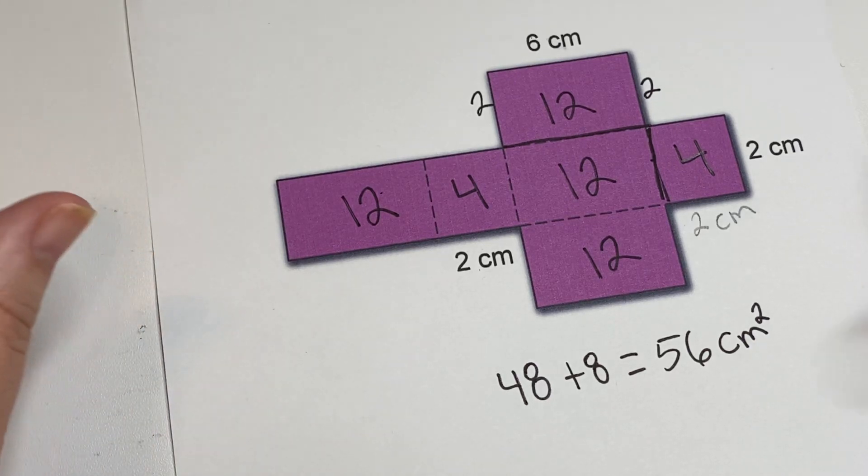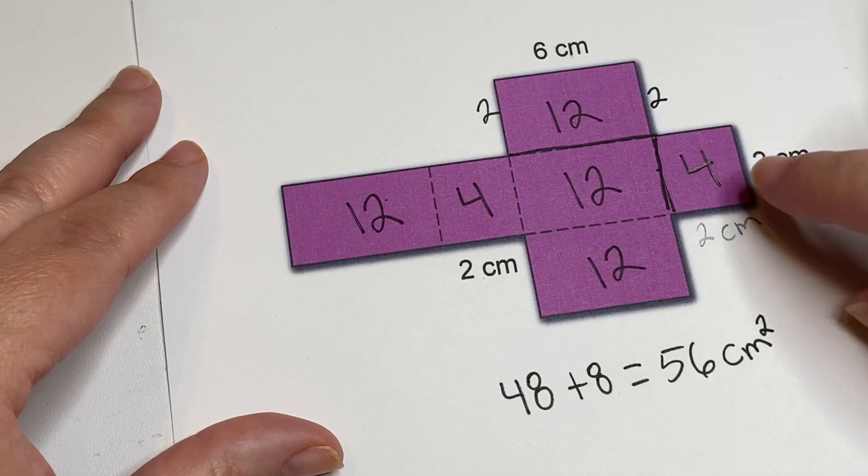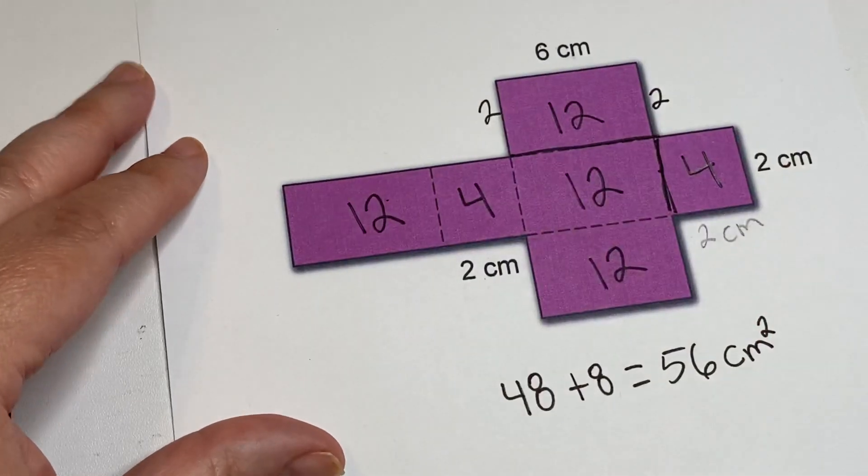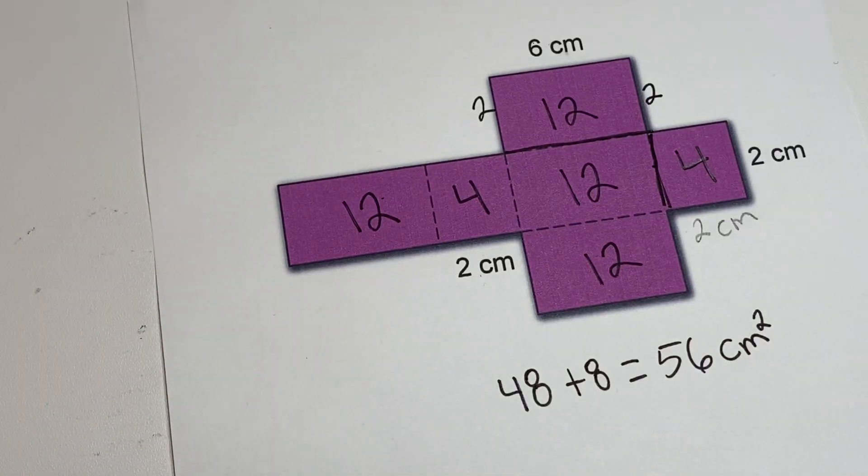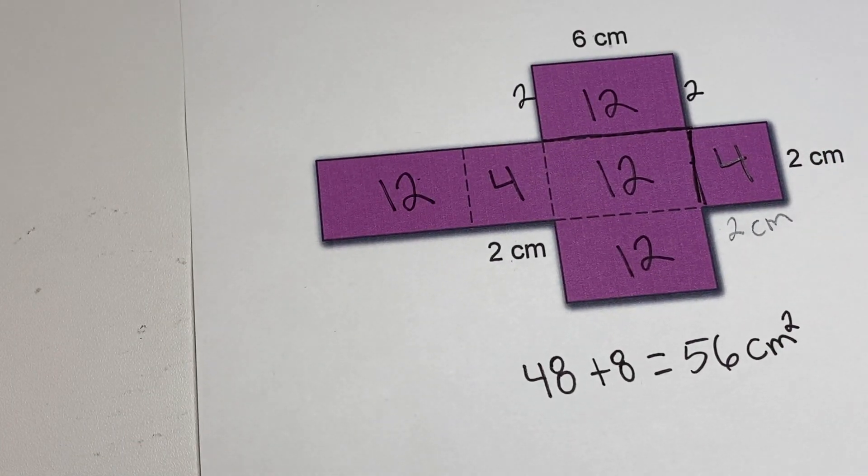Okay, so that is how you would find the area of this kind of a net of a rectangular prism. So good luck, go do some of the practice work, and we'll talk to you soon. Bye!